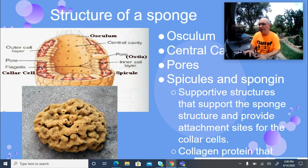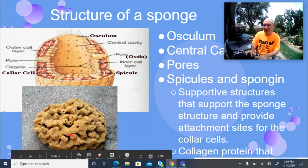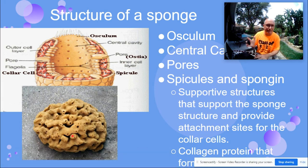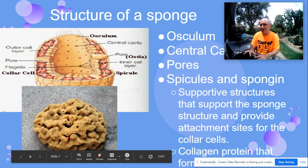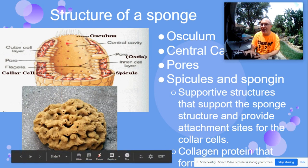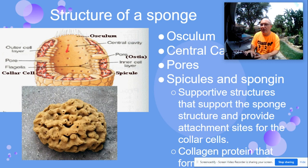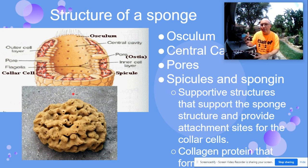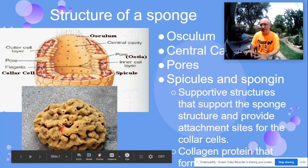If you look at a processed natural sea sponge — the kind you can buy in stores — you can see the bigger holes. The ostia are the small pores on the sides, and the osculum is the bigger hole where water exits. In this diagram, we see one central osculum with a central cavity and pores all around the sides. This is reminiscent of a barrel sponge or tube sponge.